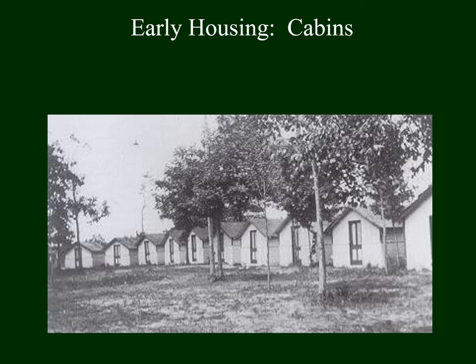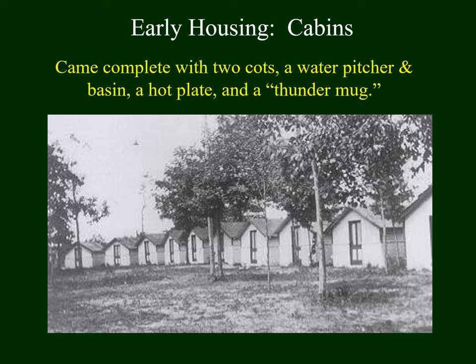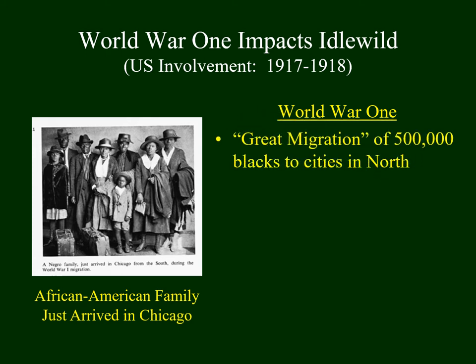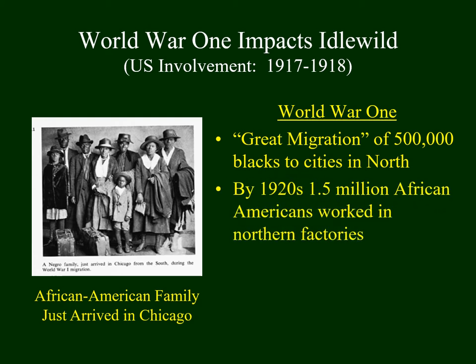Early housing was pretty rustic. A row of early cabins came complete with two cots, a water pitcher, a basin, a hot plate, and a chamber pot — no running water, but fun nonetheless. By the late 1910s, the United States became involved in the First World War, and as a result many African Americans moved to northern cities — perhaps as many as 500,000 by 1920. By the 1920s, over 1.5 million African Americans worked in factories in northern cities, and during the summer months they wanted respite from the heat, making Idlewild a popular destination.